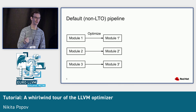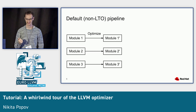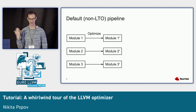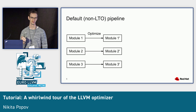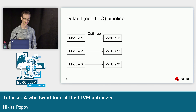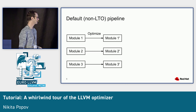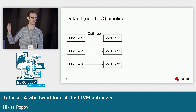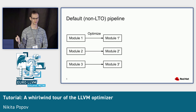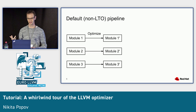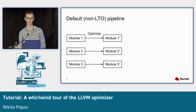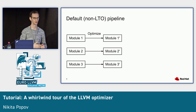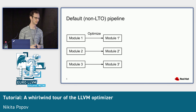In the middle-end, we have a couple of different optimization pipelines. The simplest one is the default pipeline, which is what you get if you don't use link-time optimization. In the default pipeline, we take each input module and optimize it independently of all the other modules. A module here is, in C or C++, just a source file. In other languages like Rust, it's a more abstract concept — a code generation unit, which is automatically partitioned.